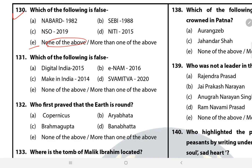Question 131: Which of the following is false? The answer is E — None of the above. Question 132: Who first proved that the Earth is round? The answer is B — Aryabhatta. Aryabhatta proved 1000 years before Copernicus that the Earth is round and rotates on its own axis. He wrote a research treatise on mathematics and astronomy at the age of 23 in 499 AD — the name of that treatise was Aryabhatiyam.